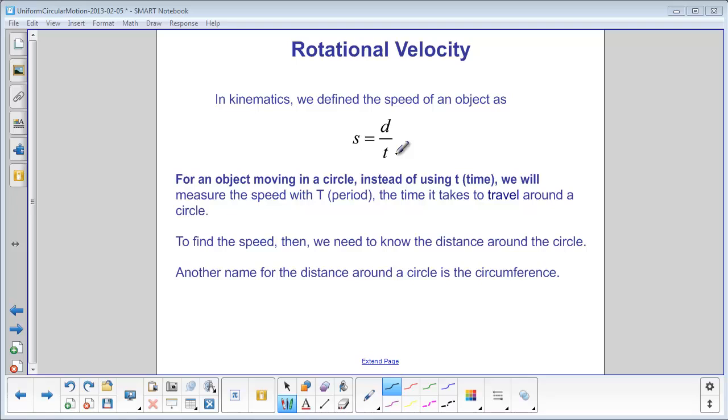For an object moving in a circle, we don't use time, we use the period, which is the time it takes to travel once around the circle. So then we need to know the distance around the circle. Do you remember what the circumference of a circle is?